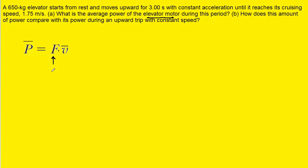Since the question asks for the average power of the elevator motor, we have to use the force the motor itself is exerting, multiplied by the average velocity. So let's make it our first goal to find that average force by drawing a free body diagram. One force acting on the elevator is gravity, pointing straight downward with a value of mg, and there must be an upward force — the force exerted by the motor, which we can call fm.